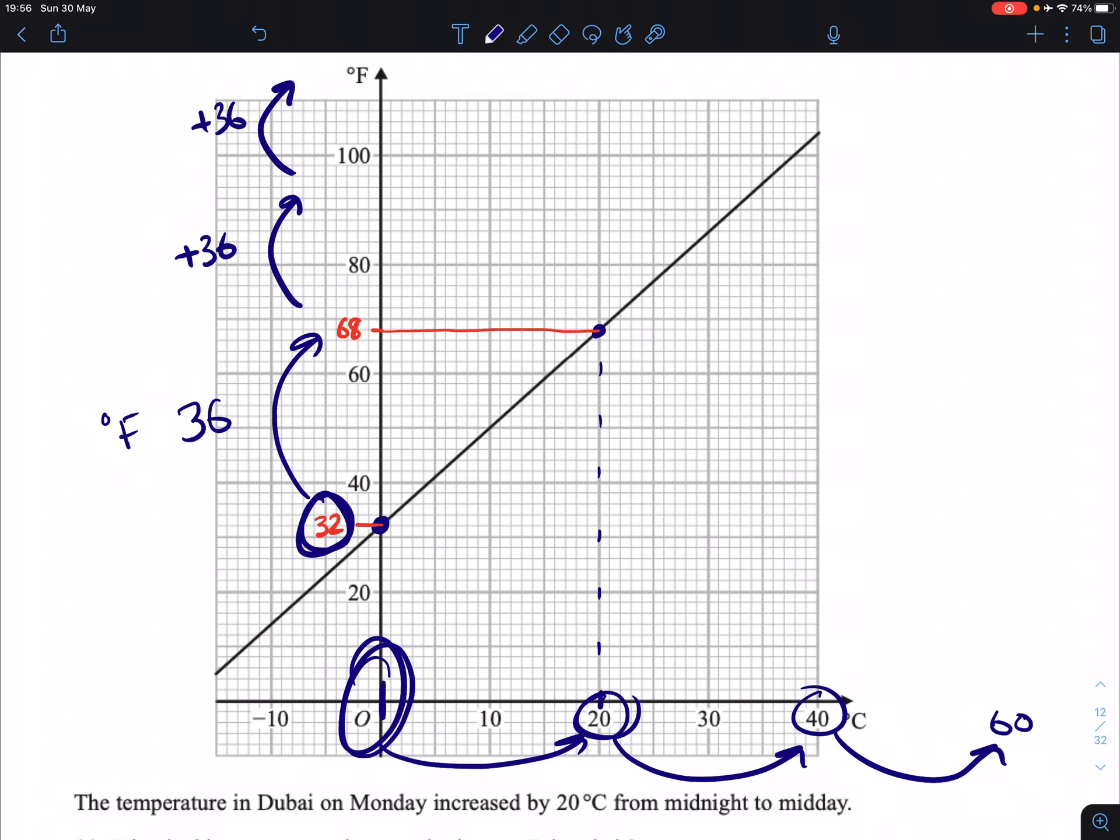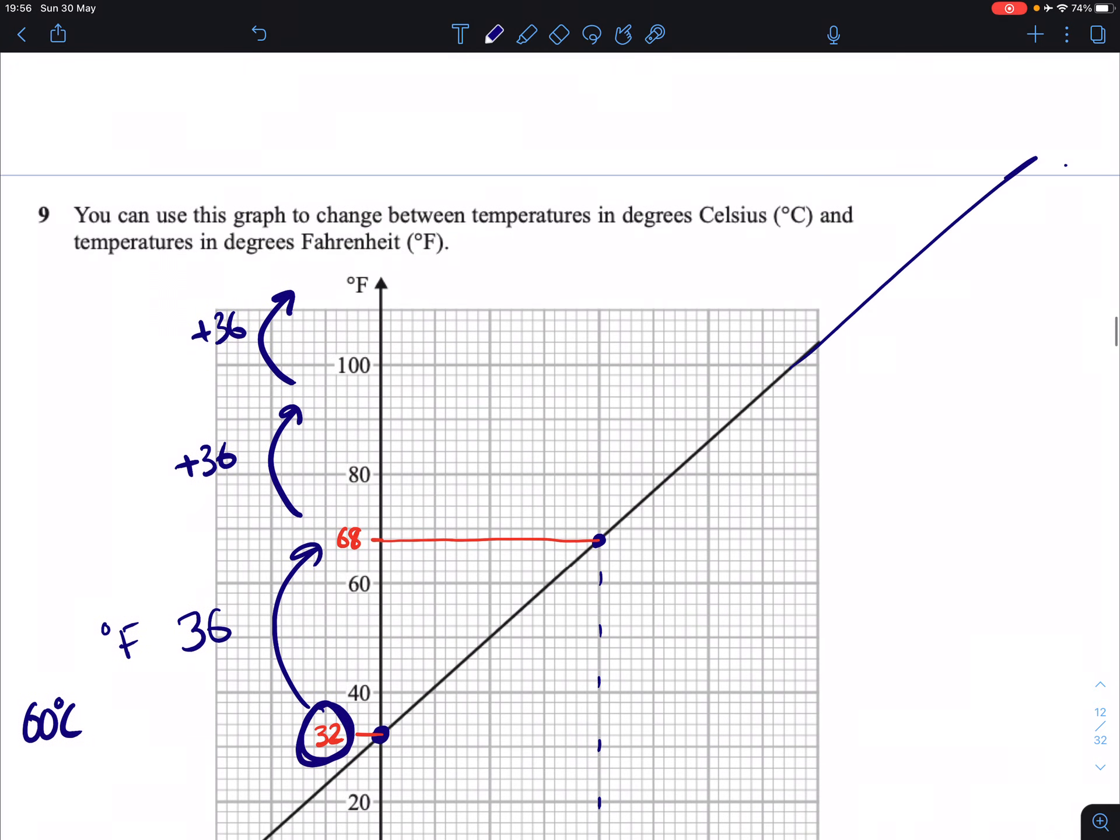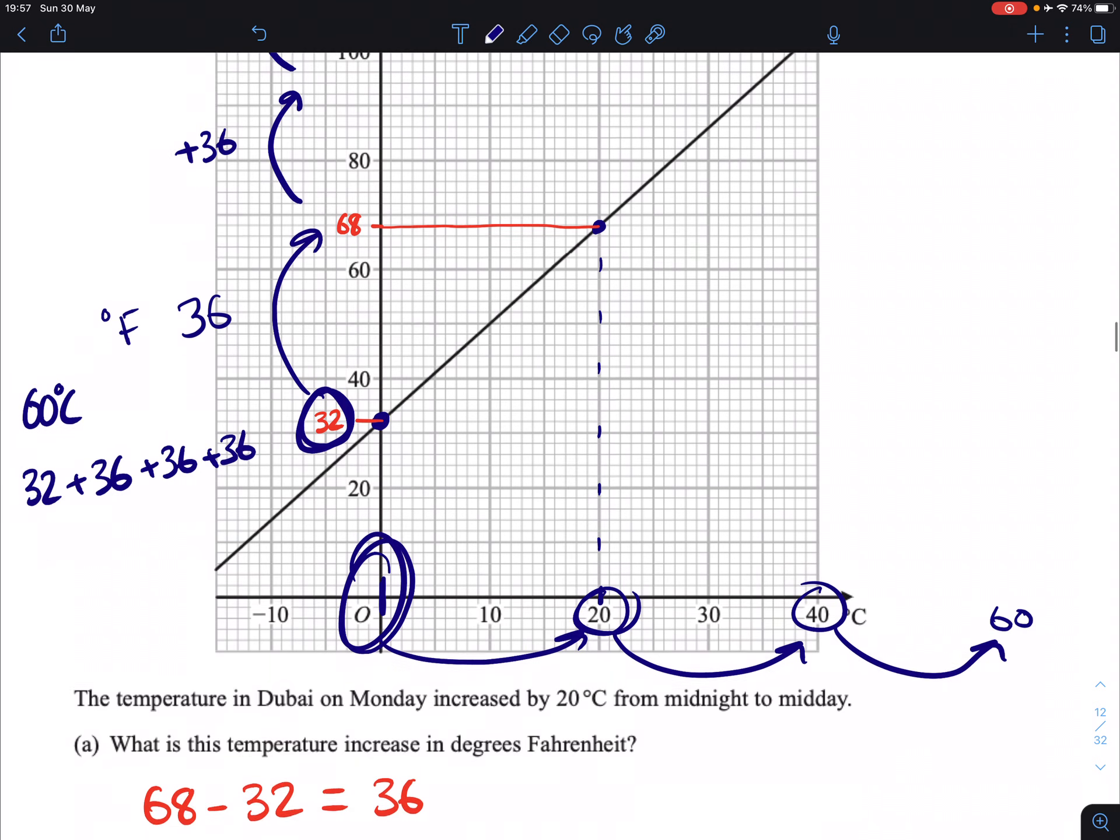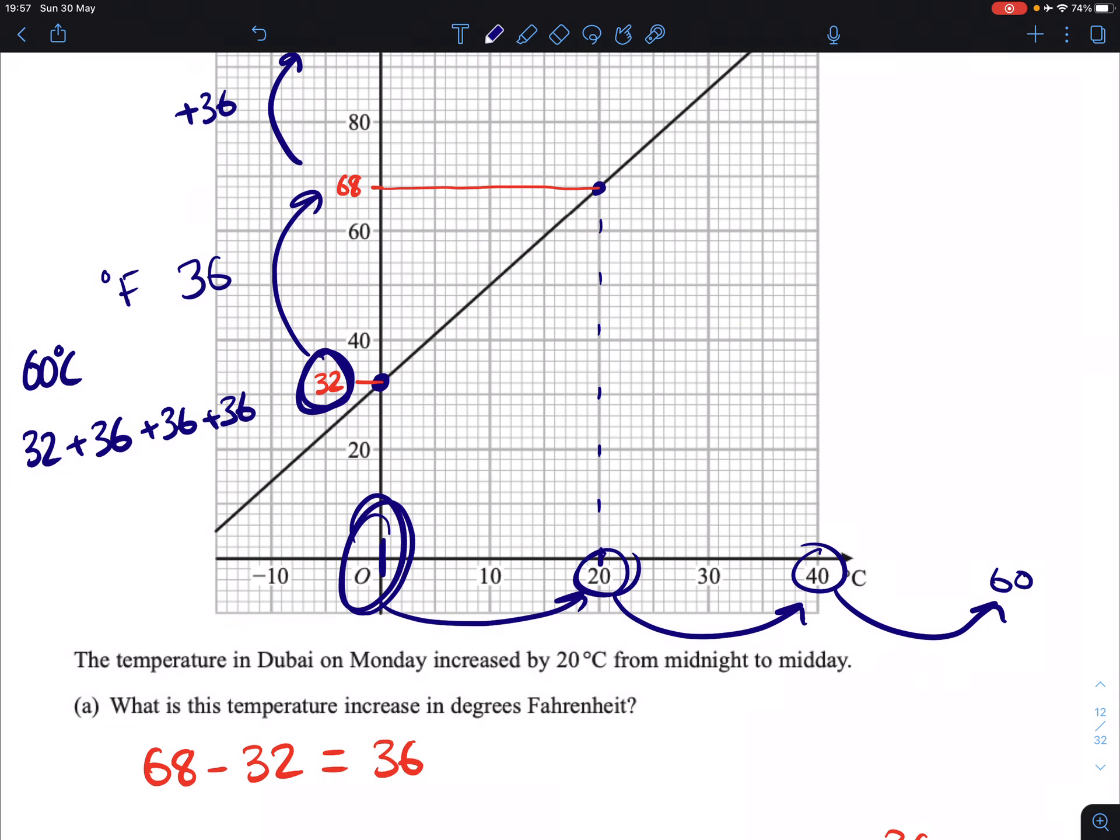So what it would actually be is that 60 degrees Celsius, if we had the graph keep going all the way up here, it would be 32 Fahrenheit plus our 36, plus another 36, plus another 36. And what we would end up from that is, we'd end up with 108 plus 32, which would give us 140 degrees Fahrenheit.